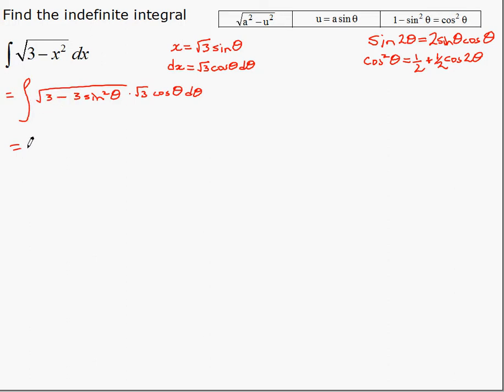So we're going to factor out the 3 here. We take it outside. It's root 3 outside. So the integral of root 3. Under the root, we're left with 1 minus sine squared. We'll write that, 1 minus sine squared theta. And that has been multiplied by root 3 cosine theta d theta.